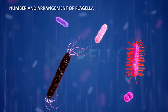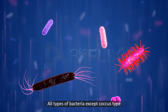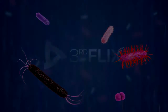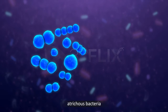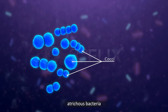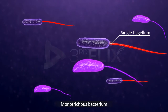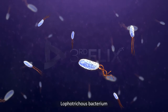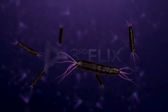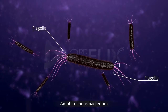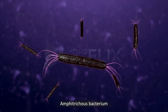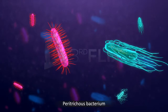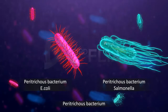Regarding the number and arrangement of flagella: flagella are present in all types of bacteria except the coccus type. In atrichous bacteria, flagella are absent — all cocci bacteria are atrichous. A monotrichous bacterium has a single flagellum; Vibrio and Acetobacter are monotrichous bacteria. A lophotrichous bacterium has a group of flagella at one end. An amphitrichous bacterium has one or many flagella at both ends; Nitrosomonas is an amphitrichous bacterium. A peritrichous bacterium has flagella all over its surface; E. coli and Salmonella are peritrichous bacteria.